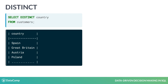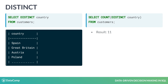Another very useful keyword is DISTINCT. If we want to filter out duplicates and only look at unique values, then we add the keyword DISTINCT to the query. For example, we select the distinct countries from the customer table, showing us all countries where customers come from. Then we can count the distinct countries, which gives us the result 11.